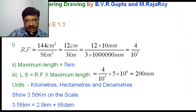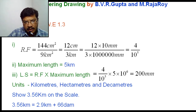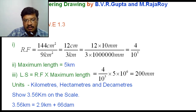This is a Vernier scale problem. In this problem, RF is not given — you have to calculate it. RF is obtained as 4 by 10 to the power of 5, and the maximum length is 5 km. From the RF and maximum length, you can get the length of the scale.